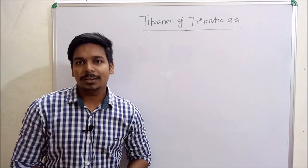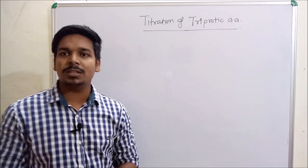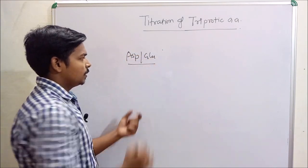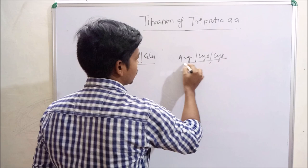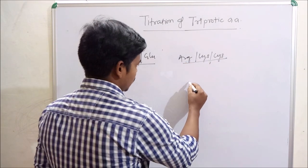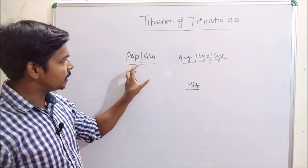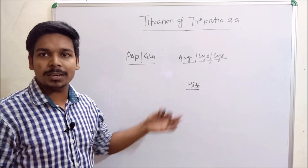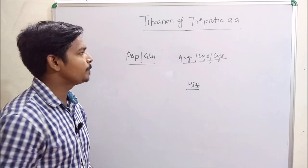So there are three cases basically: aspartate and glutamate show the same characteristics; arginine, lysine, and cysteine show the same characteristics; and histidine is its own case. These three cases exist in triprotic amino acids, and they show different characteristics after the titration process. Let's see them one by one.